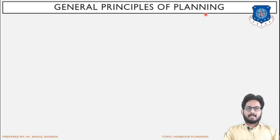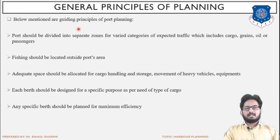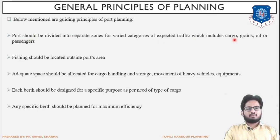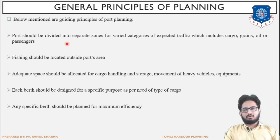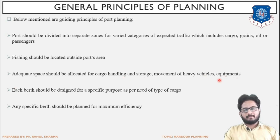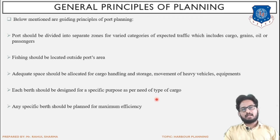General principles of harbour planning: the port or harbour should be divided into separate zones for varied categories of expected traffic, including cargo, grains, oils, or passengers. Depending upon the cargo to be handled, various zones can be created for easy processing. The zone allocated for fishing should be kept outside the port area. Adequate space should be allocated for cargo handling, storage, and movement of heavy vehicles and equipment.